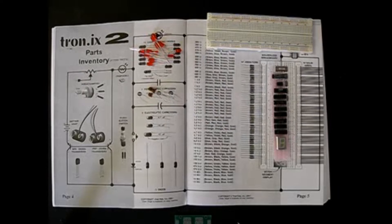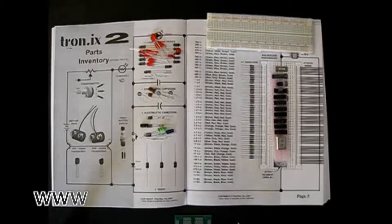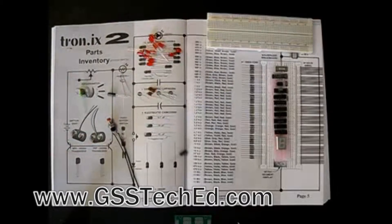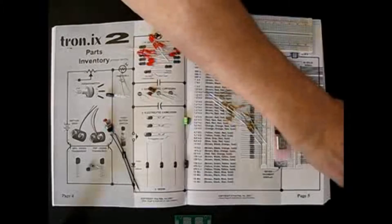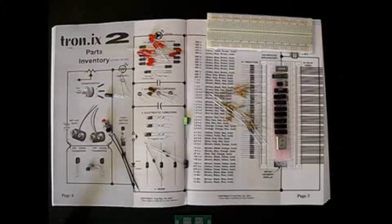You get three ceramic disc capacitors and three electrolytic capacitors of different values. A push-button switch. A photo cell. The transistors. All of the resistors that are shown here, you get a whole group of 47 different resistors.